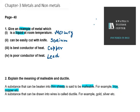Second is ductile. Ductile means that if you have a substance and you can convert that substance into wires, then it is known as ductile. The property is called ductility, and examples include gold and silver.